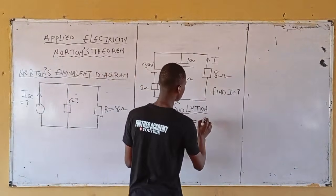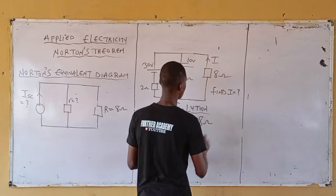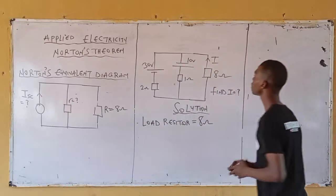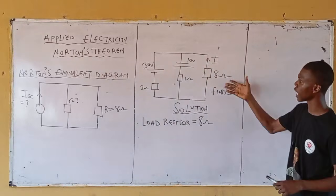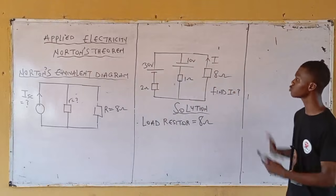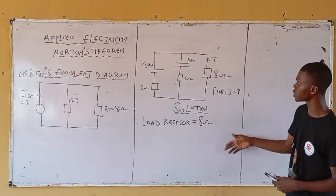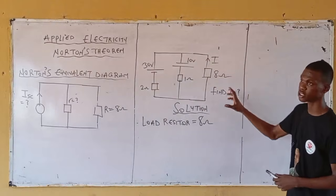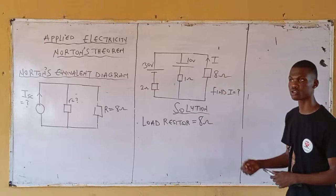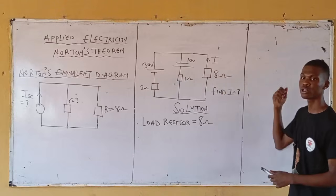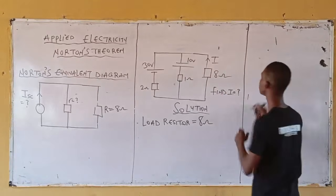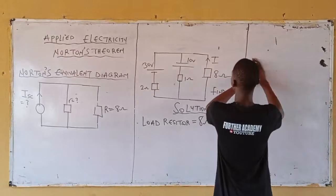The next step: first, you identify the load resistor. Then you draw a diagram by substituting — remove the load resistor. By doing that, you have this circuit.